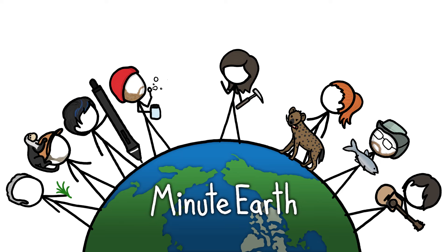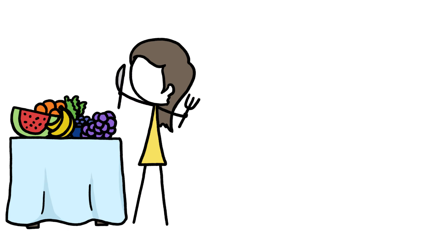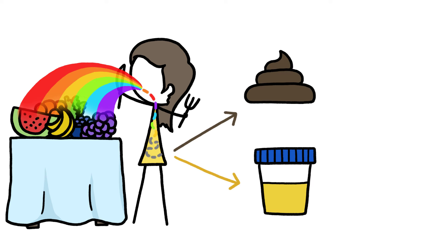Hi, this is Emily from MinuteEarth. Although the things we eat and drink are all sorts of colors, they all come out the other end looking either brown or yellow.